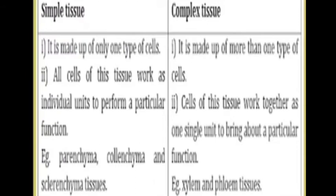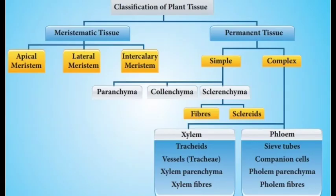Simple tissue is made up of only one type of cell. All cells of this tissue work as individual units to perform a particular function. Examples are parenchyma, collenchyma, sclerenchyma, or epithelial tissues of animals and meristematic tissues of plants. Complex tissue is made up of more than one type of cell. Cells of this tissue work together as a single unit to bring about a particular function. Examples are xylem and phloem tissues, and blood of animals also comes under complex tissue.